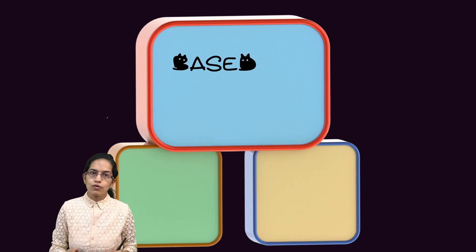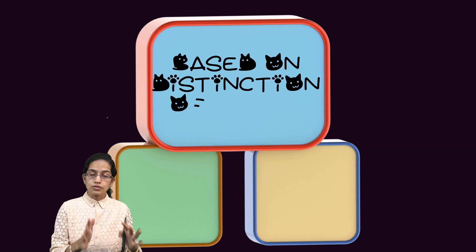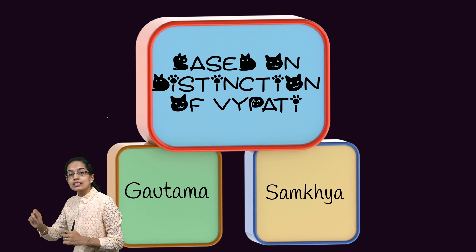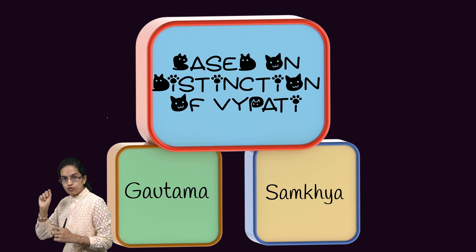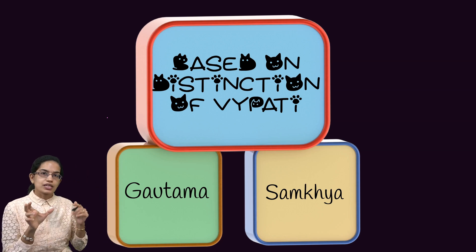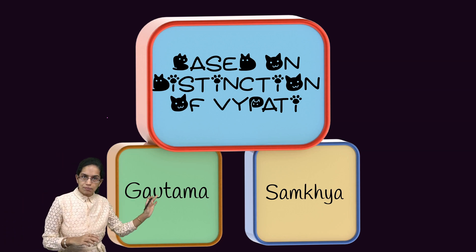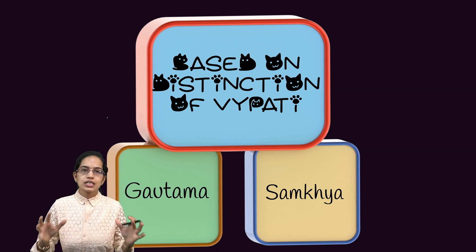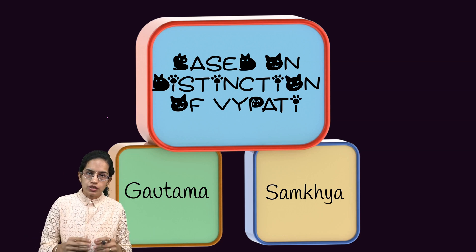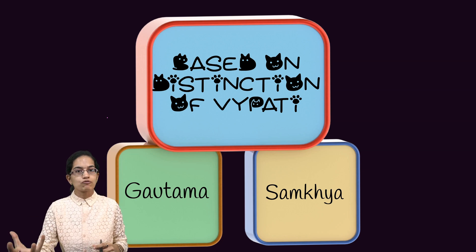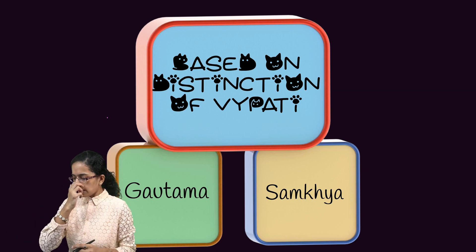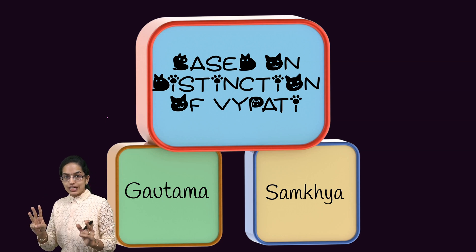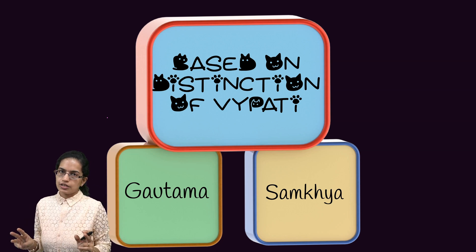Both the Gautama theory and the Sankhya Darshan focus on the distinction of Vyapti. Just a quick recap of Anuman — it is something being derived from previous knowledge. We have three types that we would be understanding today.